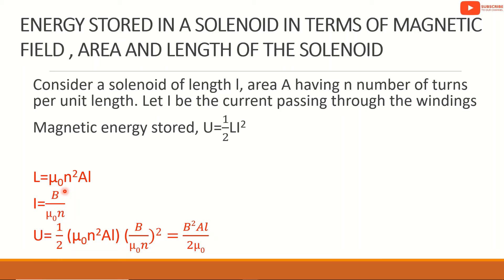From the solenoid, B equals μ₀·n·I, which means I equals B divided by μ₀·n.